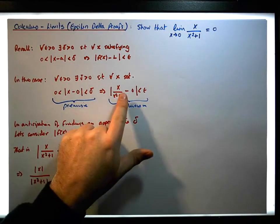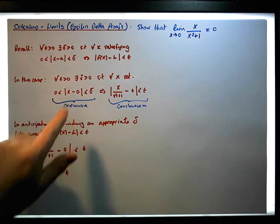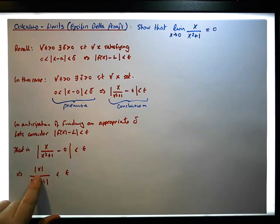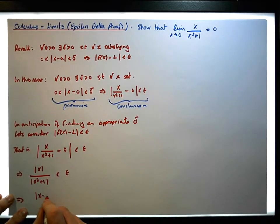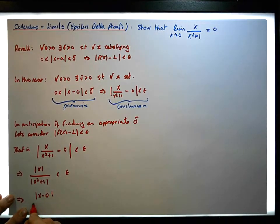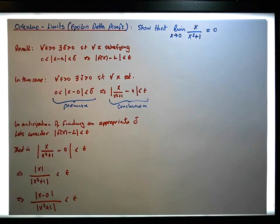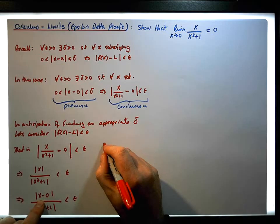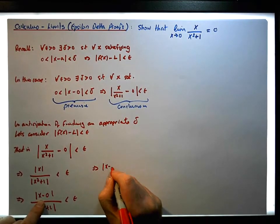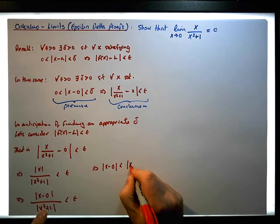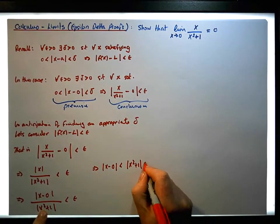Now what we'd like to do is get this into the form of the premise. Note that the absolute value of x is the same as the absolute value of x minus 0, so this is the same as the absolute value of x minus 0 over the absolute value of x squared plus 1, which must be less than epsilon. This implies that the absolute value of x minus 0 must be less than the absolute value of x squared plus 1 times epsilon.